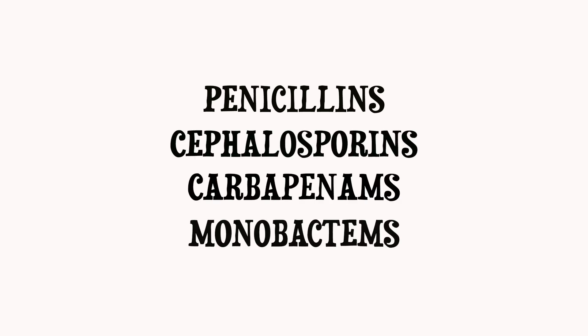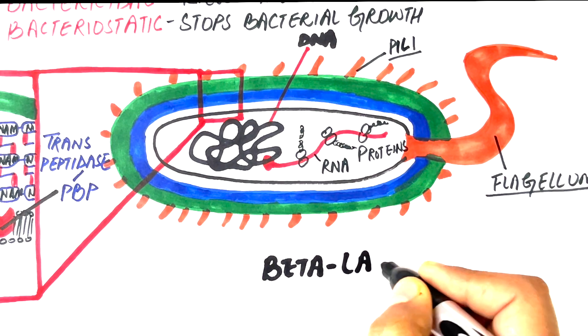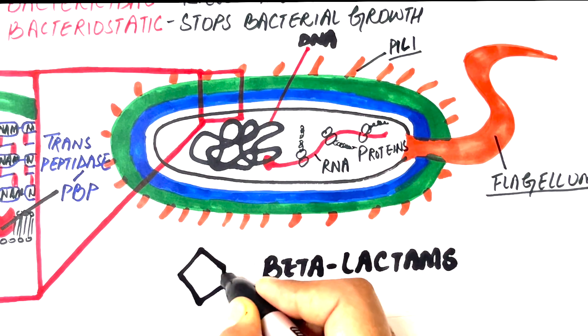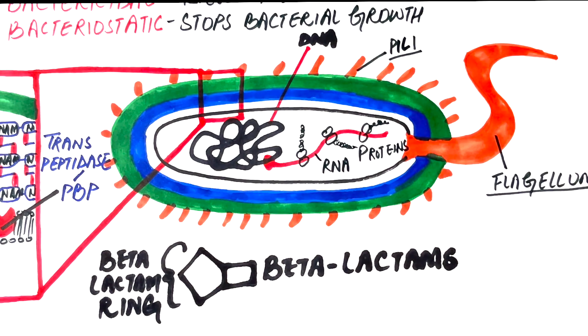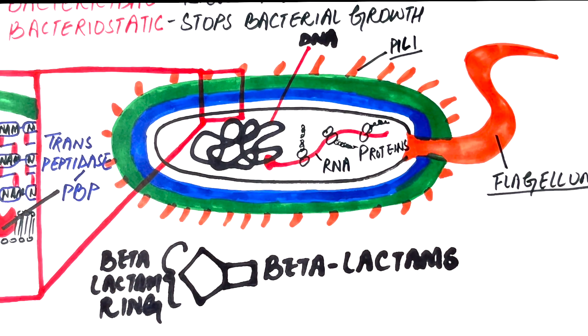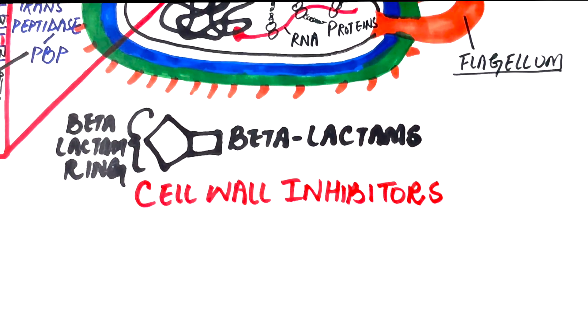Antibiotics that can inhibit bacterial cell wall synthesis are penicillins, cephalosporins, carbapenems, and monobactams. In today's lecture we will look into penicillins and cephalosporins. These drugs that inhibit cell wall synthesis are also called beta-lactams. A beta-lactam drug consists of a beta-lactam ring in their chemical structure. The mechanism of action of all beta-lactams is almost the same.